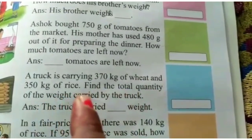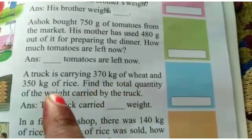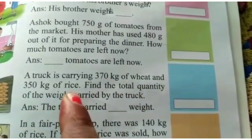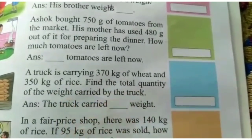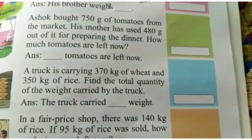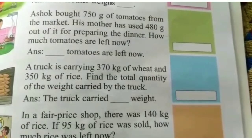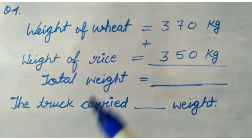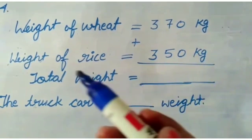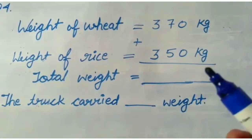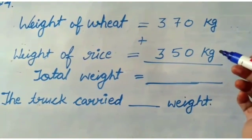Question 4: A truck carried 370 kg of wheat (गेहूं) and 350 kg of rice (चावल). Find the total quantity of weight carried by the truck. For the solution, we write: weight of wheat = 370 kg, weight of rice = 350 kg. Now total weight — पूछा है तो क्या करेंगे — add करेंगे।